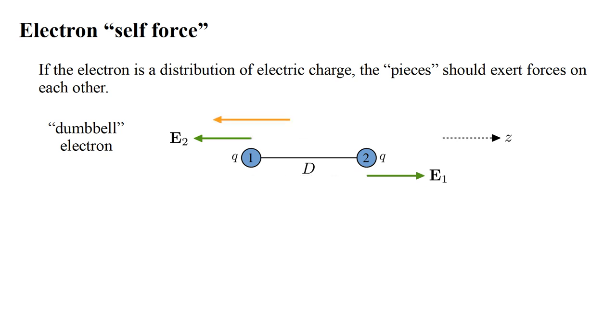If we move to the right of part one, we are moving closer to part two, so field E-two is stronger. If we move to the right of part two, we are moving farther from part one, so field E-one is weaker.